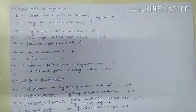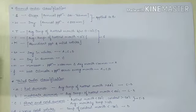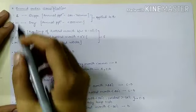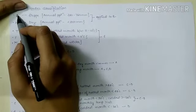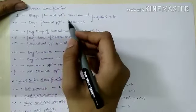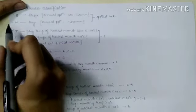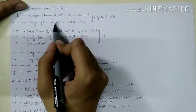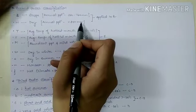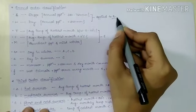The second order classification is based on the amount of precipitation the area receives. Capital S represents steppes where annual precipitation is between 360 to 760 millimeters. Capital W represents dry climate where annual precipitation is below 250 millimeters. Both S and W are applied to B type of climate.